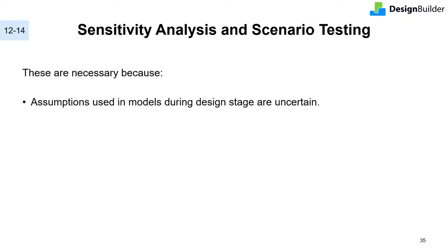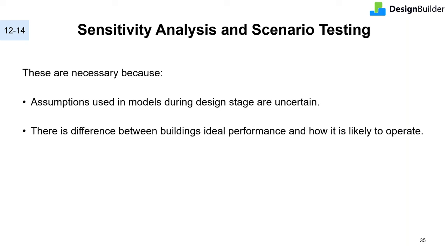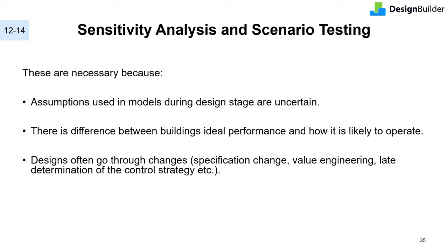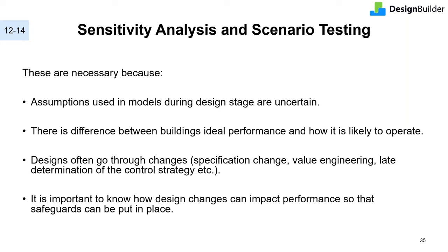Why do we need to look at uncertainty? Models are created using assumptions. As the design evolves, some of these assumptions become more certain, but others — specifically related to operations and occupant behavior — will remain uncertain. This means there will always be a difference between the building's predicted performance and how the building is actually likely to operate. Additionally, designs often go through changes such as value engineering. Using these analyses, we can gain an understanding of how important some of these design changes are, and consequently make stakeholders aware of the need to safeguard energy conservation measures.